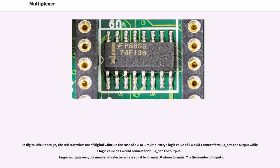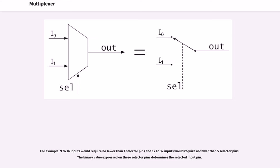In larger multiplexers, the number of selector pins is equal to formula underscore 6 where formula underscore 7 is the number of inputs. For example, 9 to 16 inputs would require no fewer than 4 selector pins and 17 to 32 inputs would require no fewer than 5 selector pins. The binary value expressed on these selector pins determines the selected input pin.